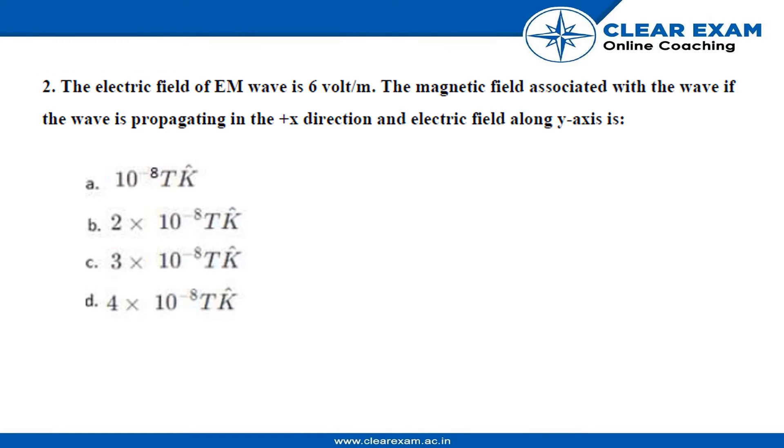Question 2: The electric field of an electromagnetic wave is 6 volts per meter. Find the magnetic field associated with the wave if the wave is propagating in the +x direction and the electric field is along the y-axis.